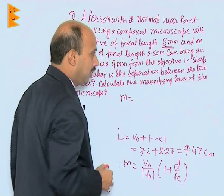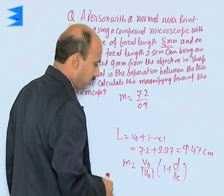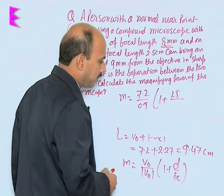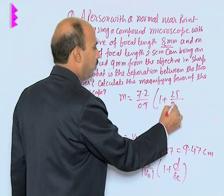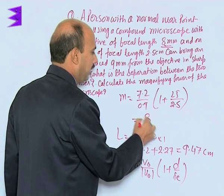We can write M is equal to 7.2 upon 0.9 multiplied by 1 plus 25 upon 2.5. F e, the focal length of the eye piece, was given here as 2.5 centimeter. When we solve it we can get 88.